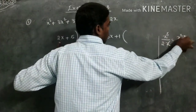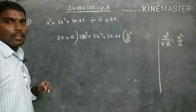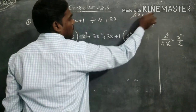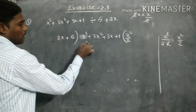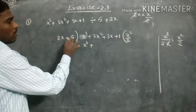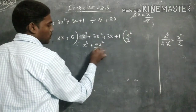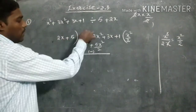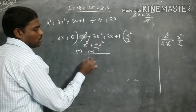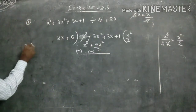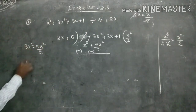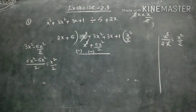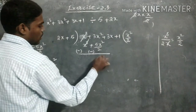Dividing x³ by 2x — the x cancels — we get x²/2. Multiplying: 2x into x²/2, the 2 cancels, giving x³. Then x² by 2 means the first quotient term is x²/2. Subtracting, the sign changes. 3x² minus 5x²/2: converting 3x² to 6x²/2, then 6x²/2 minus 5x²/2 equals x²/2. Bring down the remaining terms: x²/2 plus 3x plus 1.